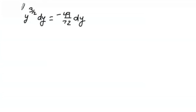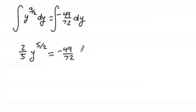And then we're going to integrate both sides. Integrate this side, integrate this side. This becomes 2/5 y^(5/2), and it's going to equal negative 49/72 t, and don't forget our integration constant plus C.